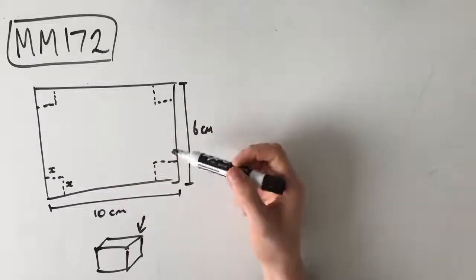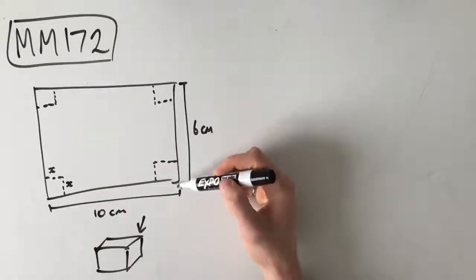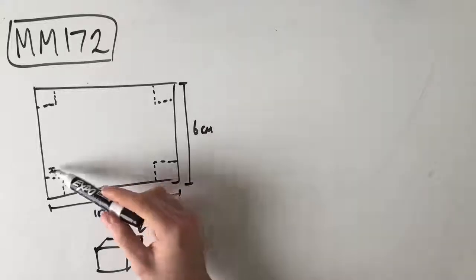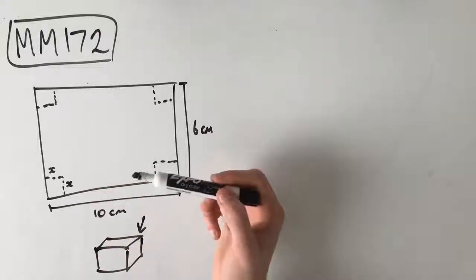So we've got this diagram. We know that the rectangle is 10cm long and 6cm wide, and he's cutting out these squares of xcm.